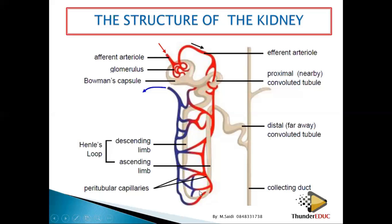Blood vessels surround the loop of Henle to allow reabsorption to take place and to pump ions that are not important in the blood out into the loop. After the loop of Henle, there is a second coil called the distal convoluted tubule. The distal convoluted tubule joins what is called the collecting duct, where urine is collected before it joins the pelvis.